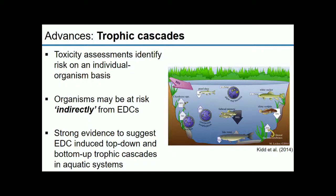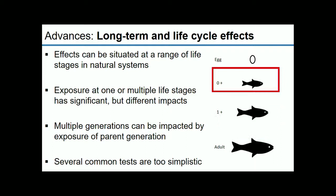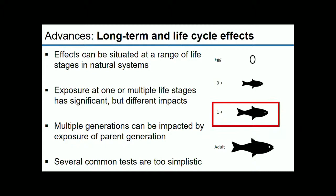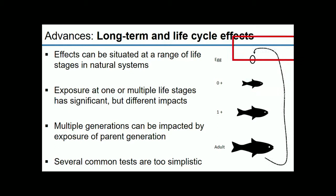Another interesting area of research is whole life cycle exposures — trying to simulate a more natural exposure duration whereby individuals in natural systems are exposed for their entire life cycle. This research has clearly shown that individual exposures at what we perceive to be susceptible life stages have a significantly different effect compared to exposing organisms over their entire life cycle. Multiple generations may also be exposed — parental generation exposure can lead to reproductive effects in offspring generations, seen over multiple generations post-exposure.